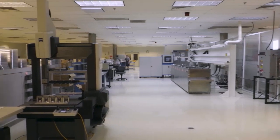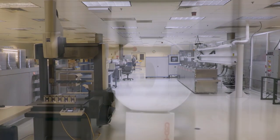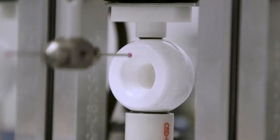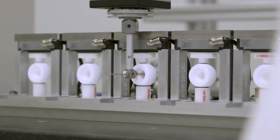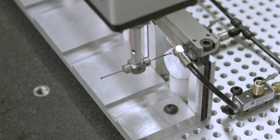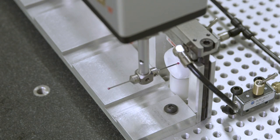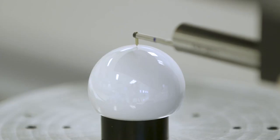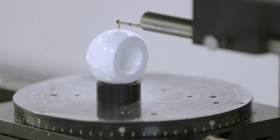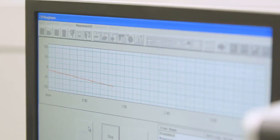The hip replacement component enters the final stages of production by going through a rigorous testing and quality control process. A ruby-tipped probe ensures the dimensions are to the exact specifications set by our customer. The surface is measured with a diamond tip to ensure proper finishes.